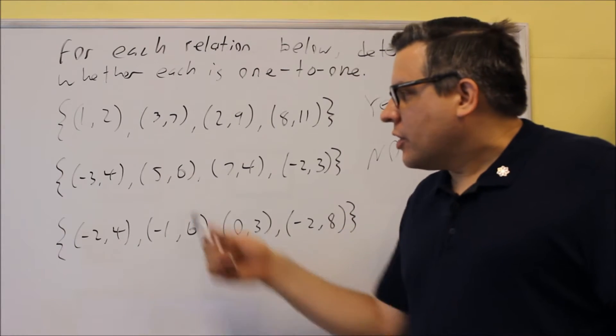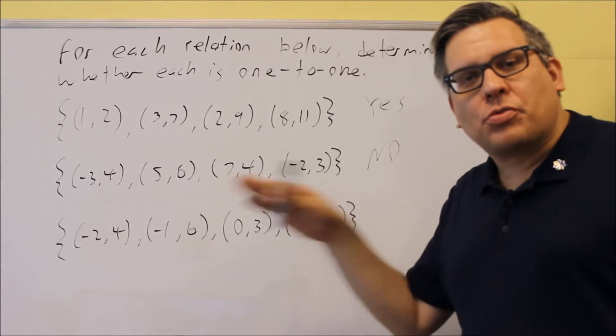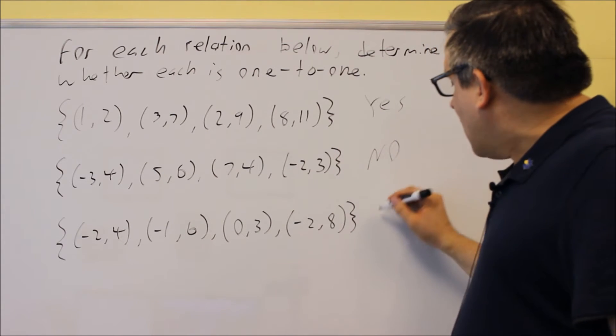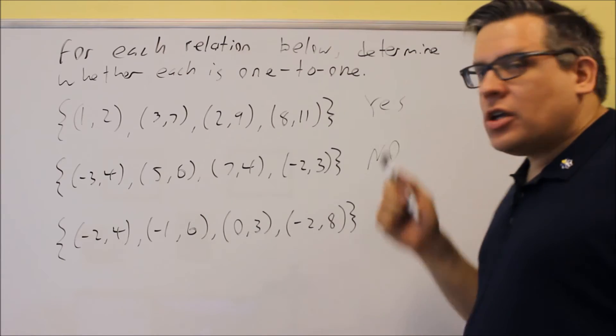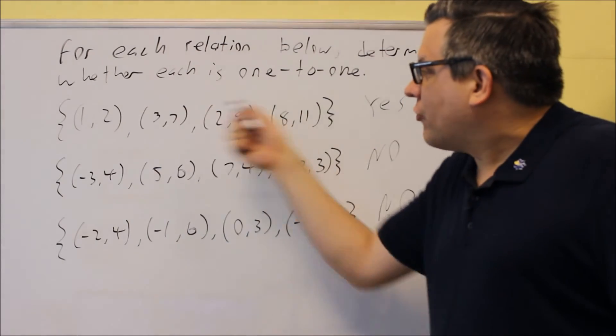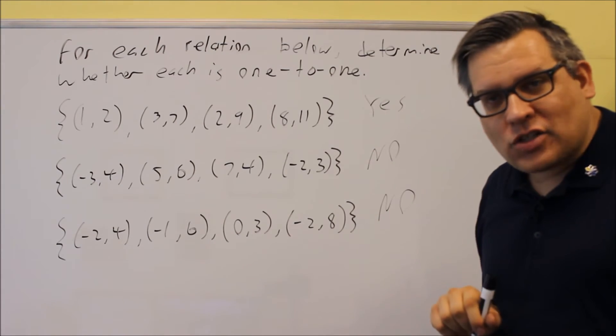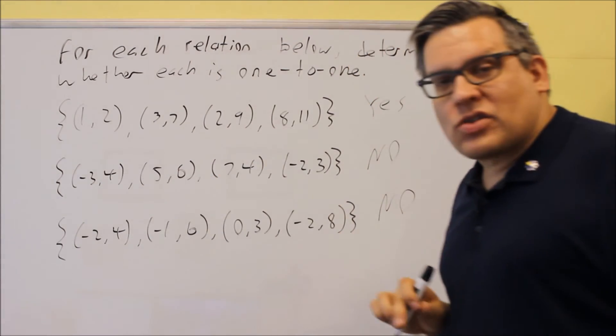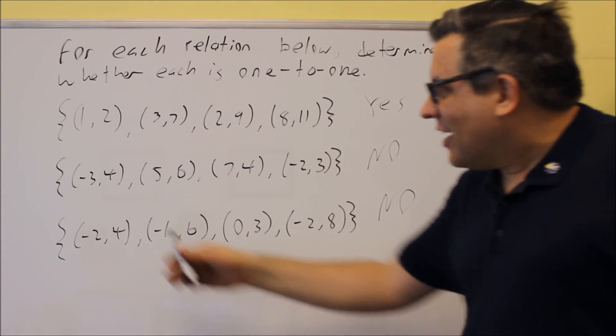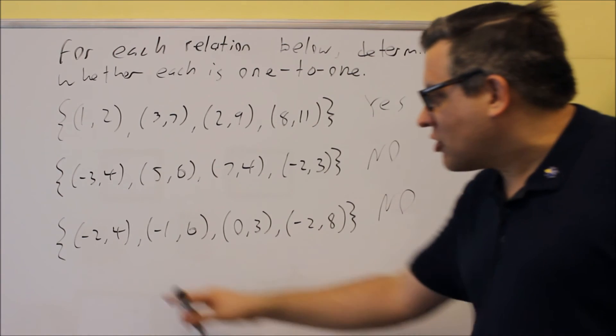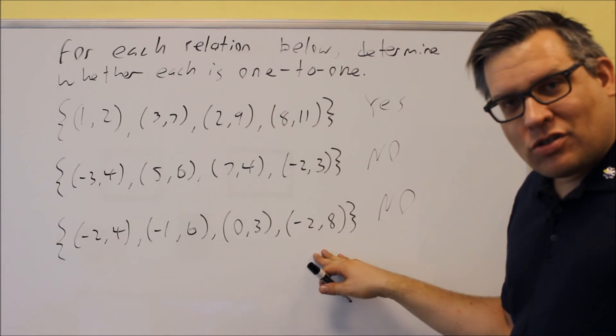So if you see either duplicate y values or duplicate x values, you've got to look at those carefully. And so in this case, the only one that's going to be 1 to 1 is the first one because we have all different y values, all different x values. If you see the same y value repeated and you have two different x values, automatically you know that's not going to be 1 to 1, and also make sure that's a function to start out with.